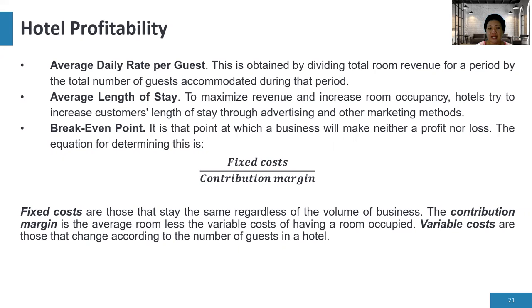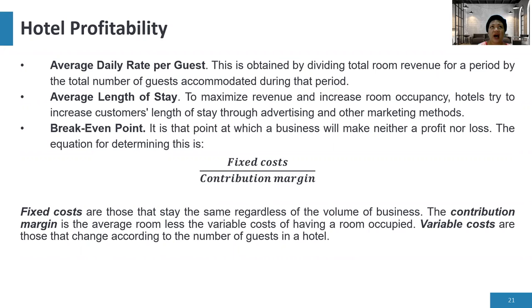Next is the break-even point — the point at which a business makes neither a profit nor a loss. The equation is fixed costs divided by contribution margin. A result of zero means no profit or loss; a negative result means a loss; a positive result means profit.